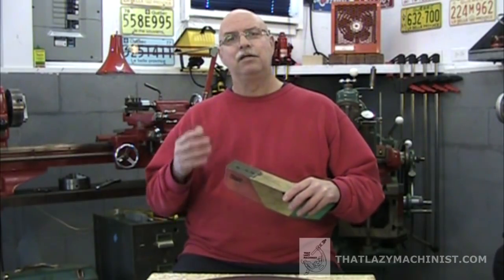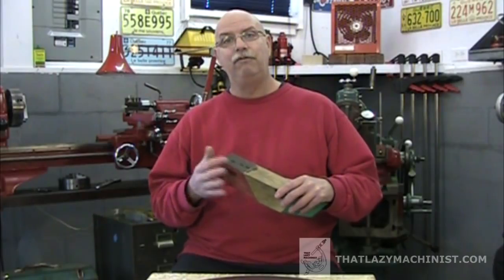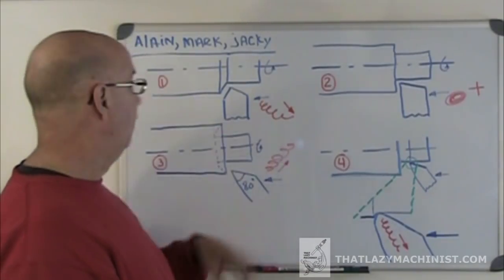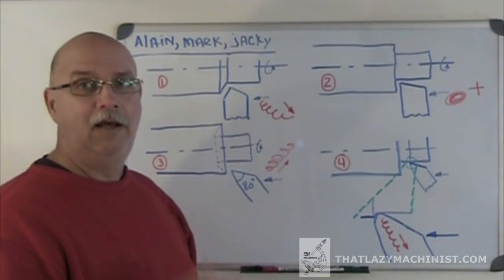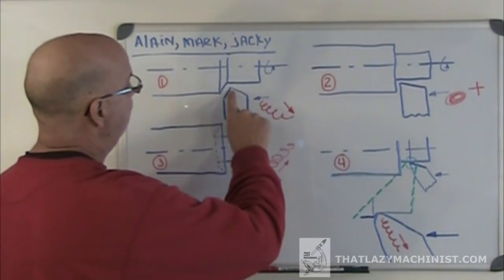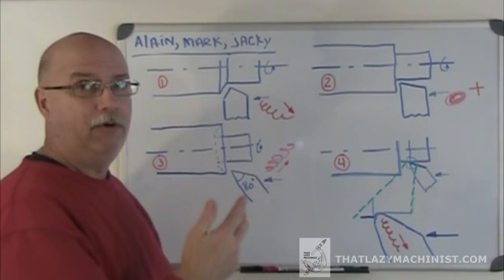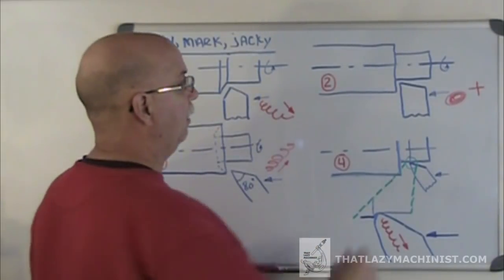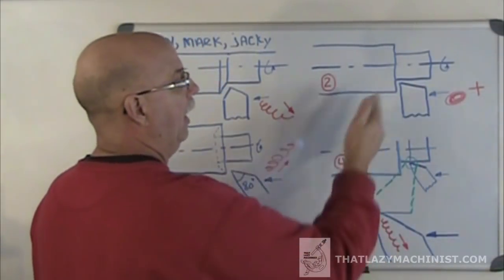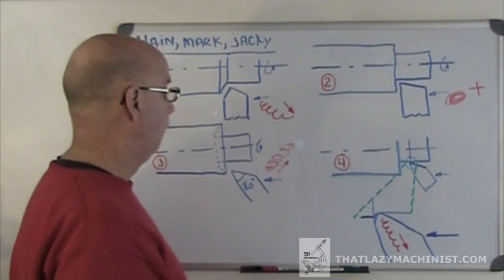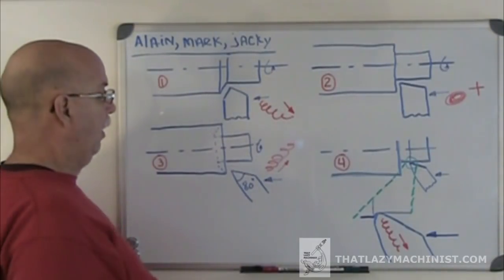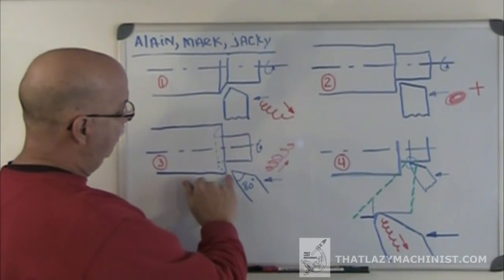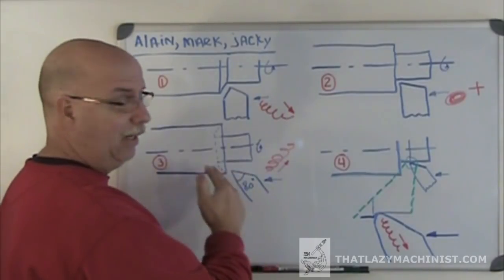Let's head over to the whiteboard and look at some theory. I have three examples here. In the first example I have what I call a positive cutting lip angle — we can see the cutting lip here. In the second example I have a neutral cutting lip angle. In the third example we have what I would call a negative cutting lip positioning — the cutting lip is negative as far as cutting action goes and it's actually going to undercut that shoulder.